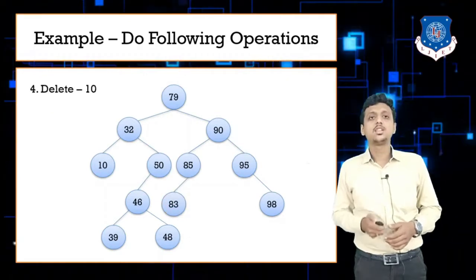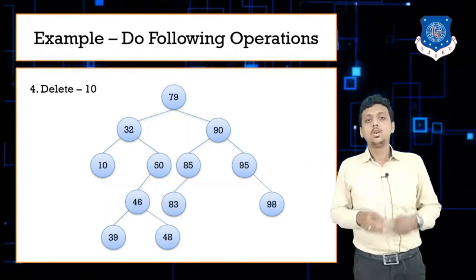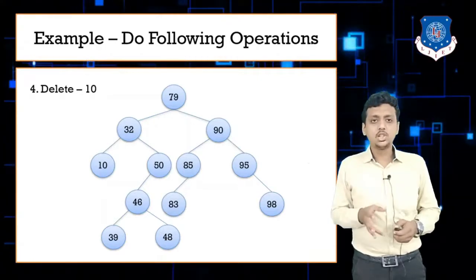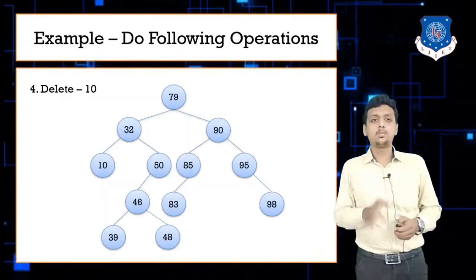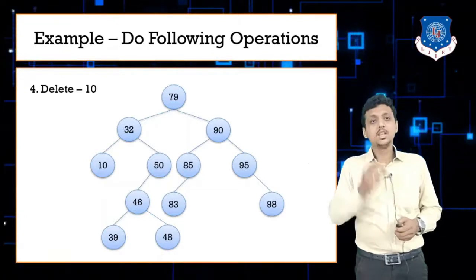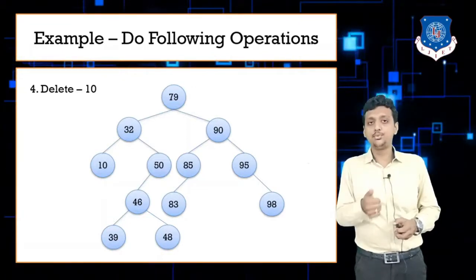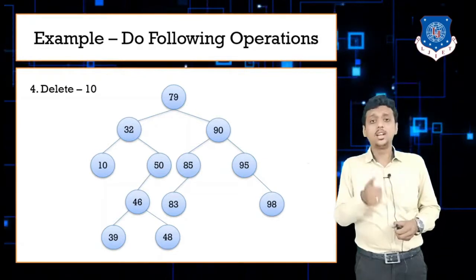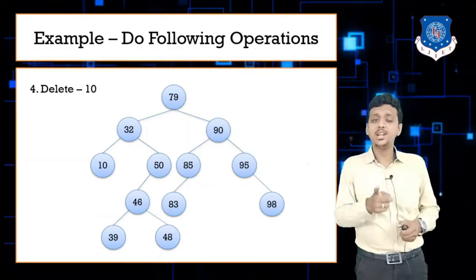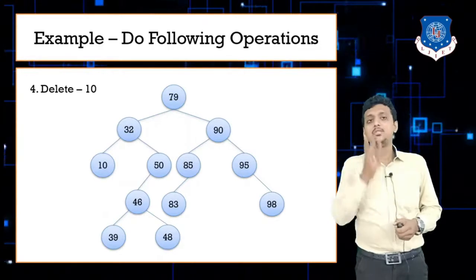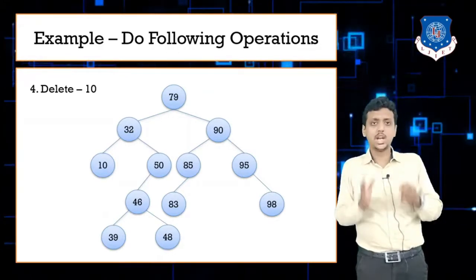Next is a deletion operation. There are three cases for every deletion operation. Case one: delete a leaf node — it is directly deleted from the tree. Case two: delete a node with one child — the child node replaces the parent node. Case three: delete a node with two children — replace the parent with the smallest value from the right subtree or the greatest value from the left subtree.